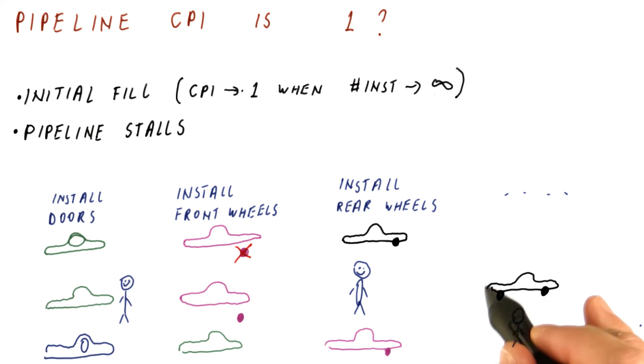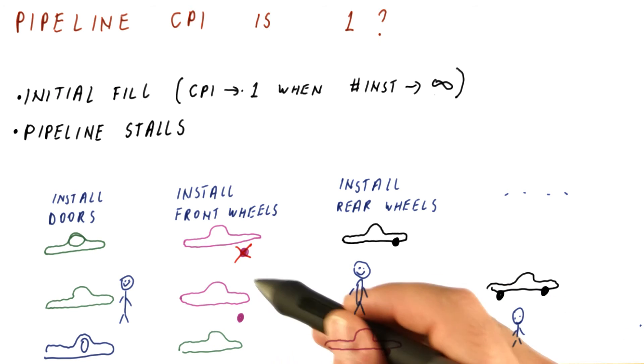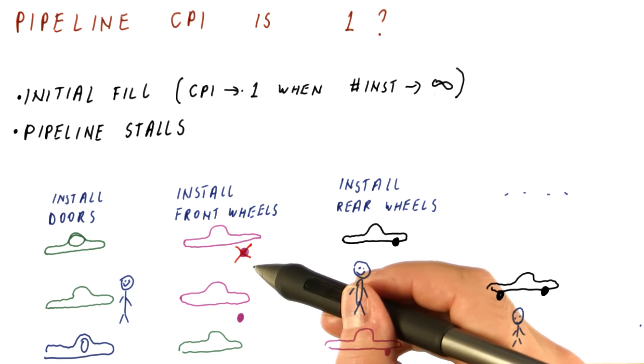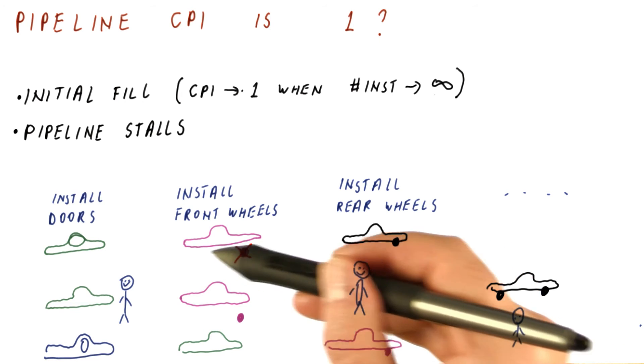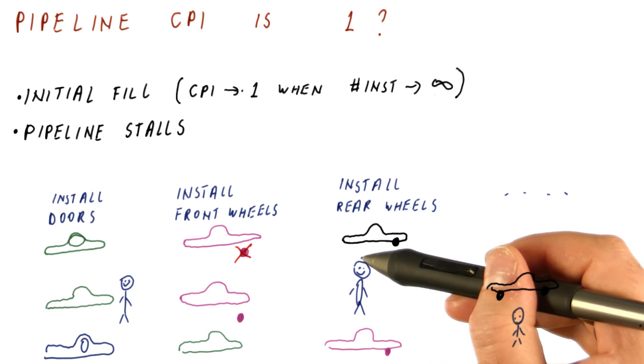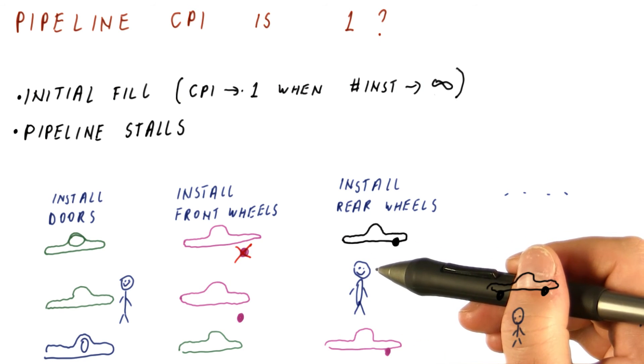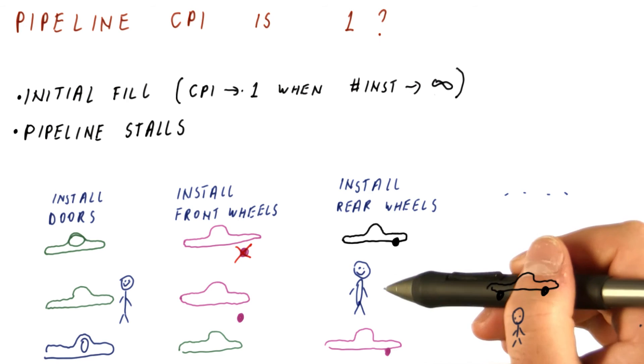So the problem is that when the black car leaves the pipeline, there will be one car worth of time where we don't finish a car, and only then the purple car will come. So every one of these breaks in the pipeline that stall the pipeline, it cannot move on, will result in not finishing a car when a car should have been finished.